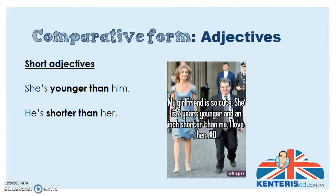This is a nice example of short adjectives. 'Young' — she's younger than him. And 'short' — he's shorter than her. Here we've got 'young' with the suffix -er, 'younger than him,' comparing her to him. And the adjective 'short' with -er, 'shorter than her,' comparing him to her.